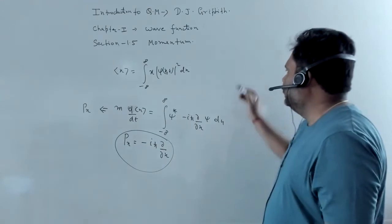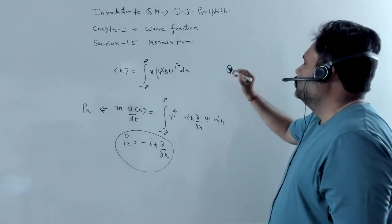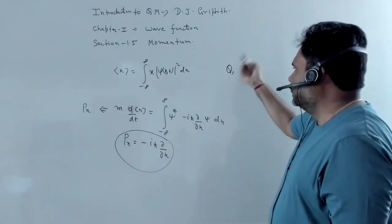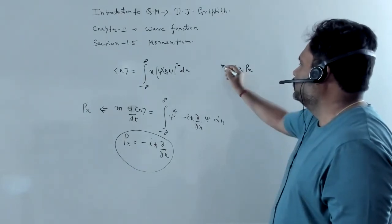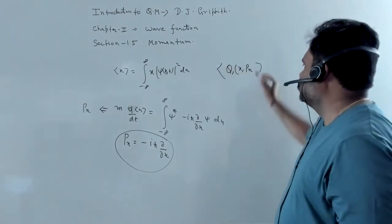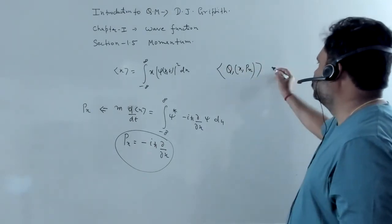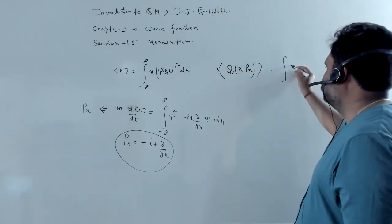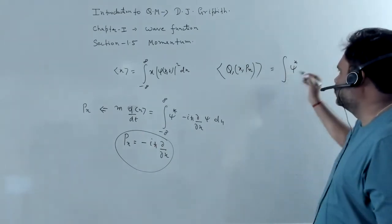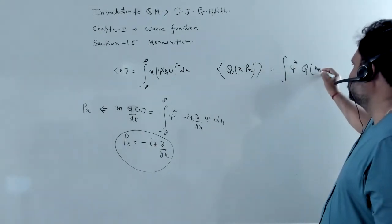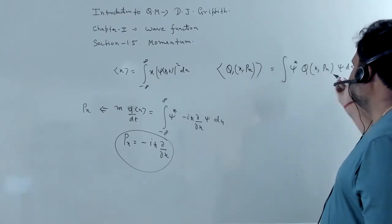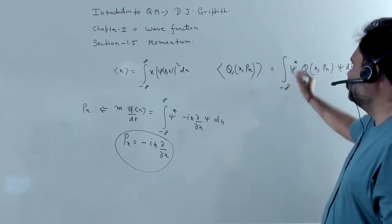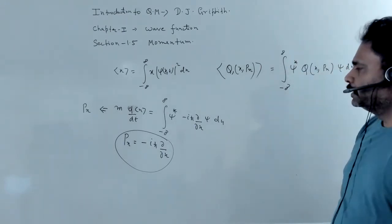And once we have any variable or any dynamical variable, let's say it is function of x and px. And if we want to take the expectation value of this particular thing, then what we have to do, we have to just go for psi star, q is the dynamical variable, and this can be function of x and px psi dx. And what we have to do, we have to integrate it from minus infinity to plus infinity.